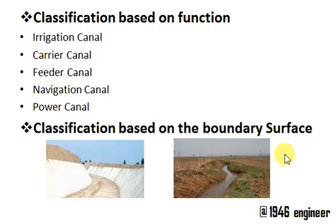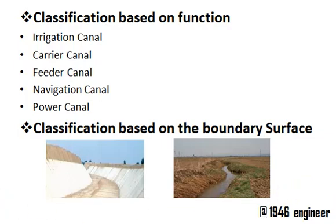Unlined or non-rigid canals are divided into two types: alluvial canals and non-alluvial canals. Alluvial canals have silt as their bed strata, whereas non-alluvial canals have clay, sand, or rock strata as their boundary.